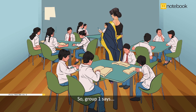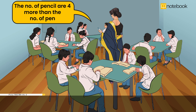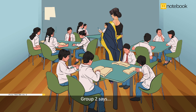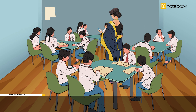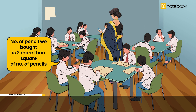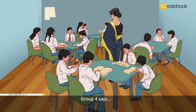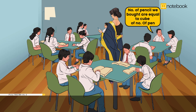Group 1 said the number of pencils are four more than the number of pens. Group 2 said the number of pencils they bought is three more than twice the number of pens. Group 3 said the number of pencils bought is two more than the square of the number of pens. Group 4 said the number of pencils they bought are equal to the cube of the number of pens.